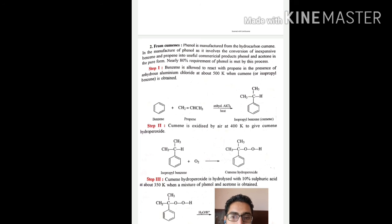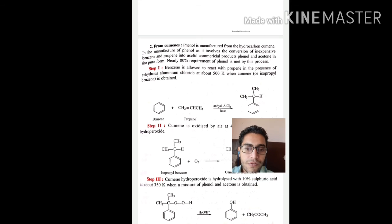Isopropyl benzene then oxidizes with oxygen at 400 Kelvin to give cumene hydroperoxide. Cumene hydroperoxide is then hydrolyzed with 10% sulfuric acid, and we get a mixture of phenol and acetone.